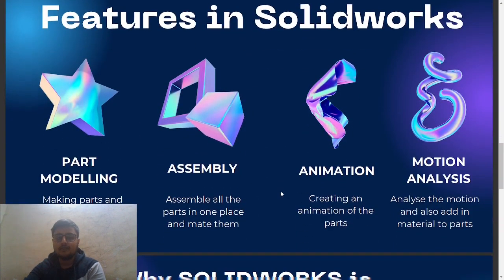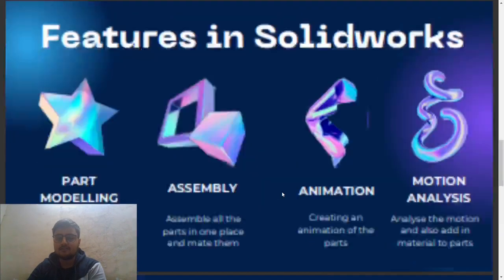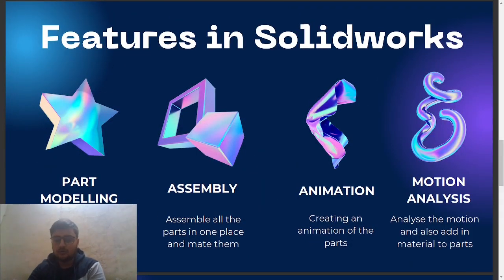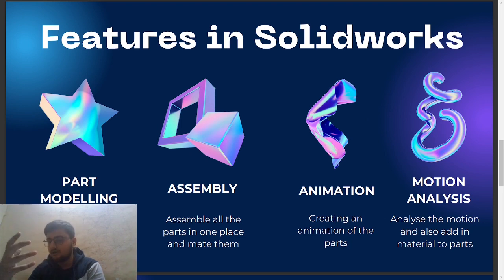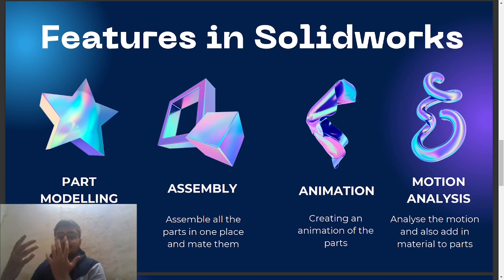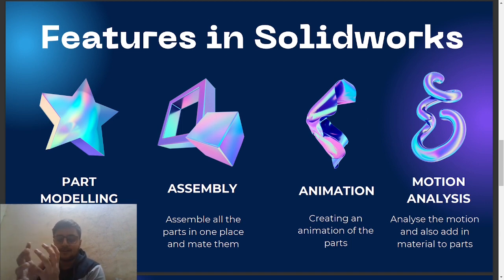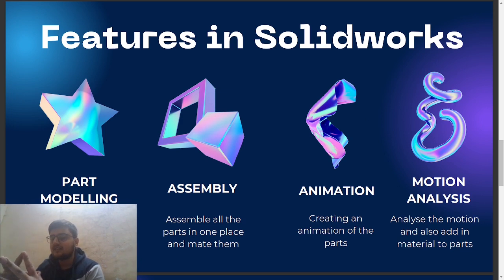The main features of SolidWorks start with basic part modeling — everything starts there to get the final output. Then there is assembly, where you assemble small parts together; for example, assembling all the fingers and joints of a hand to form an assembly. There is also animation, where you can animate these things, and motion analysis, where you can analyze how motion will behave when parts are mated together.